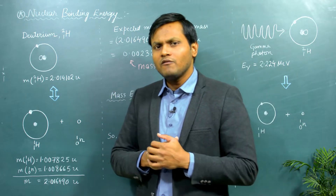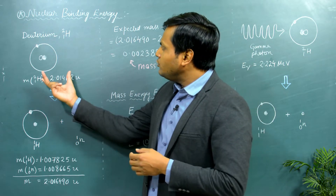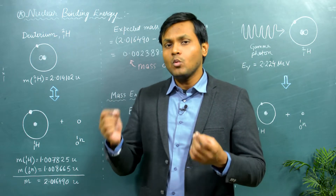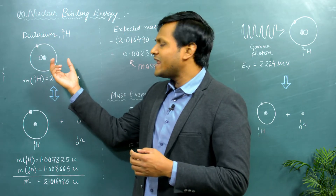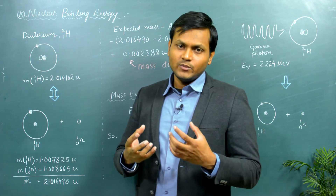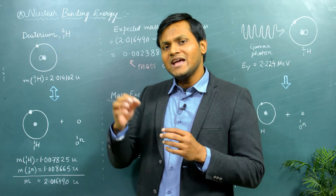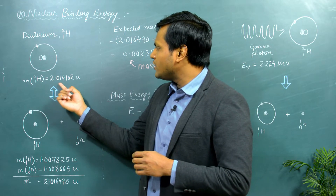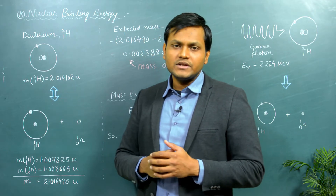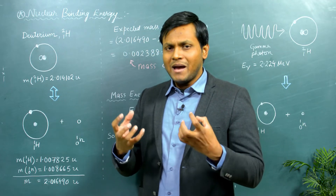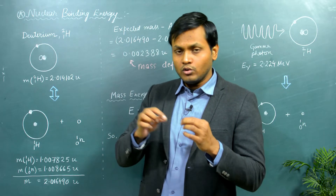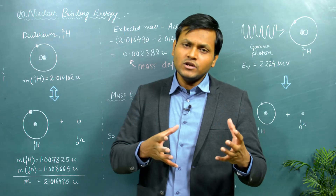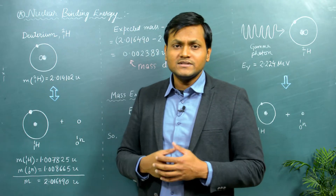Here I have taken the example of a deuterium atom. The deuterium atom is basically an isotope of hydrogen. Hydrogen has one proton and one electron, but deuterium has an extra neutron inside it — one proton and one neutron in the nucleus and one electron in its atomic shells. The mass of a deuterium atom comes out to be around 2.014102 atomic units. If I break apart the deuterium atom into a proton, neutron, and electron, you would probably expect the sum of the masses of all these constituent particles to equal the mass of the deuterium atom itself.